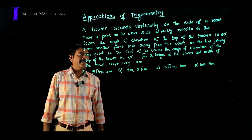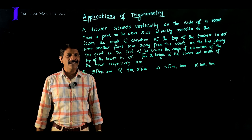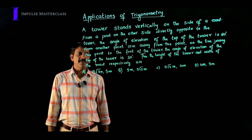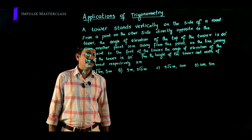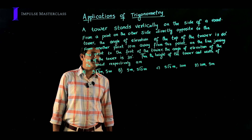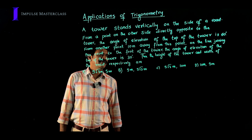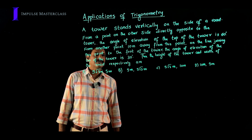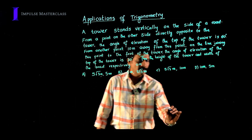Then the height of the tower and width of the road respectively are: option A, 5√3 and 5; option B, 5 and 5√3; option C, 5√3 and 10; option D, 10 meters and 5 meters. Let us understand this problem through a diagram.